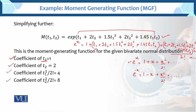So the coefficient of t1 is equal to 1. Now for t2: the coefficient of t2 is 2. The coefficient 2 is here. t2 also appears in the squared term but becomes t2², so the coefficient of t2 from the linear part is 2.